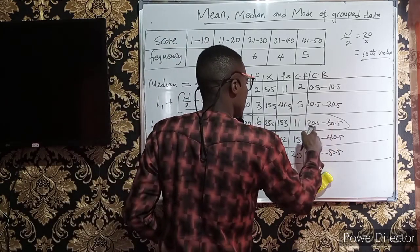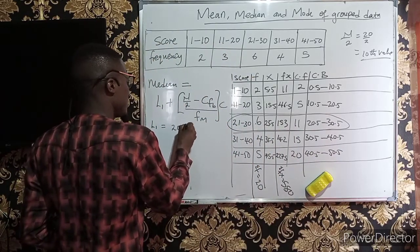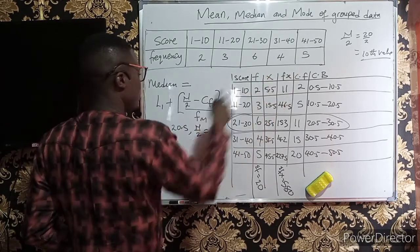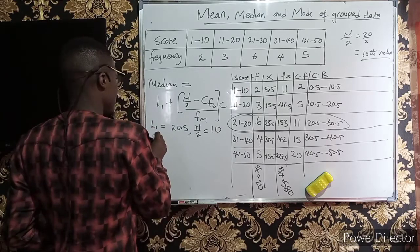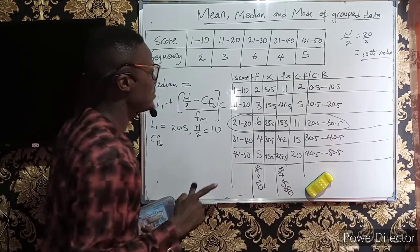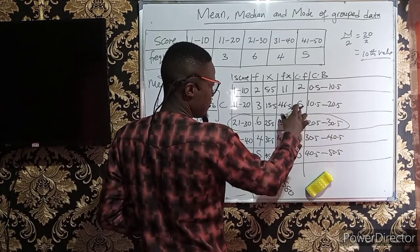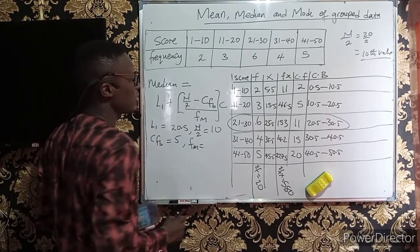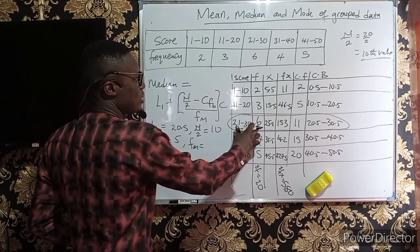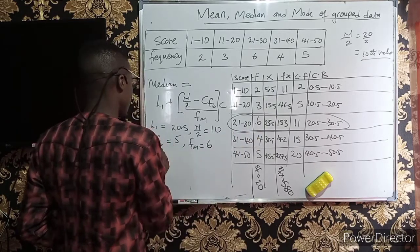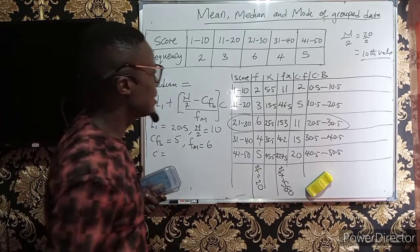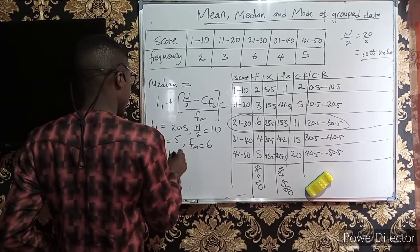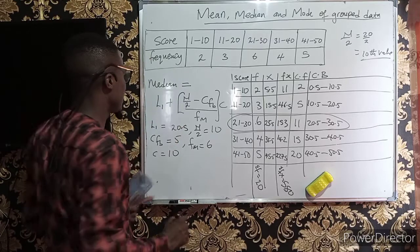The lower class boundary L1 of the median class (21–30) is 20.5. n/2 = 10. The cumulative frequency before the median class, cfb, is 5. The frequency of the median class, fm, is 6. The class size c is obtained by subtracting the lower boundary from the upper boundary of the class, giving 10.